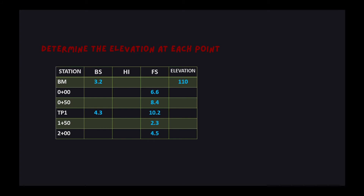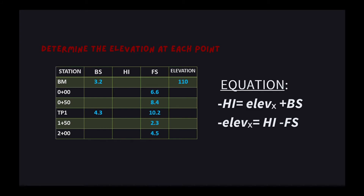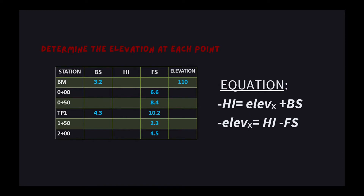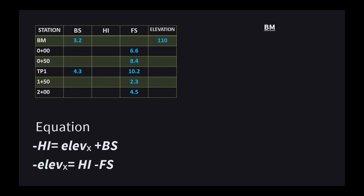Let's look at this table. The backsight and foresight were already noted; what is left to fill in is the height of the instrument and the elevation. This topic is really easy — we only have to utilize two equations: HI equals elevation plus BS, and elevation equals HI minus FS. For BM, let's solve for HI first. Using the equation, HI equals elevation, which is 110 in this case, plus BS of 3.2, giving us 113.2.